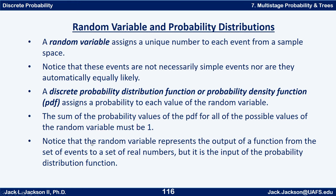Now remember, a random variable assigns a unique number to each event from a sample space, and notice that these events are not necessarily simple events nor are they automatically equally likely. But a discrete probability distribution function, or probability density function PDF, assigns a probability to each value of the random variable. And the sum of those probability values for the PDF for all possible values of the random variable must be one. Now notice that the random variable represents the output from a function from the set of events to the set of real numbers, but it's the input of the probability distribution function. So we're going to think of it mainly as the input.